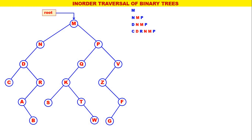Next, the leftmost is R. The inorder for R is A, R with R processed, so R is replaced by AR. Next, the leftmost is A. The inorder for A is A, B with A processed. Now the leftmost is B. The inorder for B is B only with B processed.